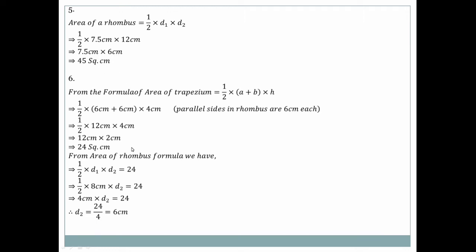Question number six: The rhombus can also be treated using the trapezium formula. All sides are equal with six on each parallel side, height = 4 centimeters. Area = half × (6 + 6) × 4 = half × 12 × 4 = 24 square centimeters.